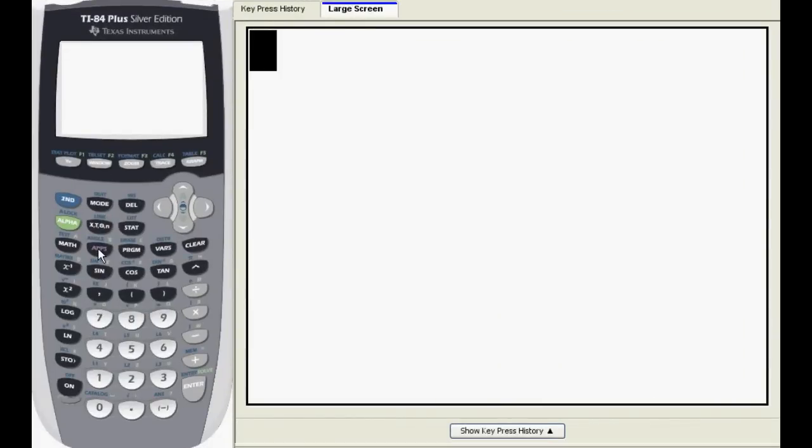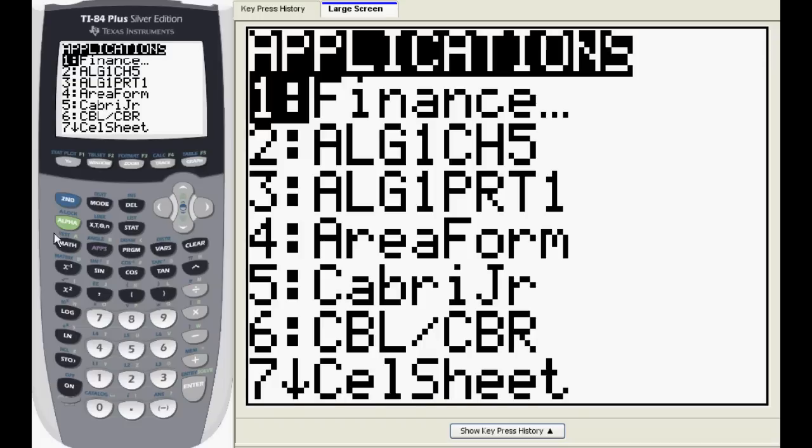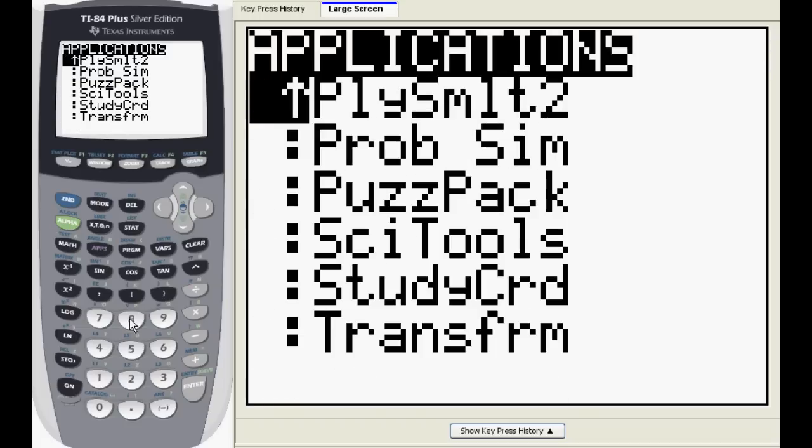Start by pressing the apps button on your calculator. We want the app PolySmlt 2. You can arrow down or press alpha P to get there faster.